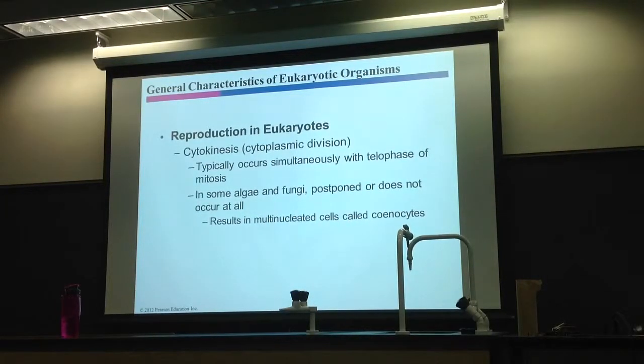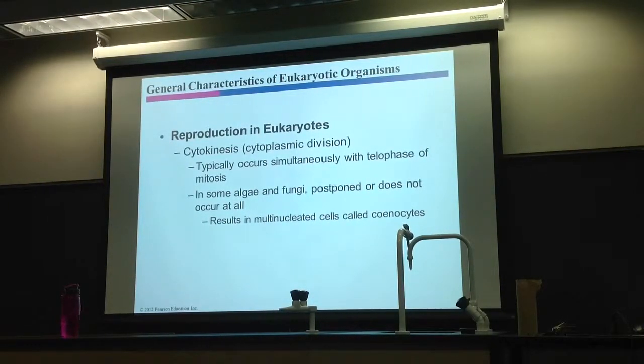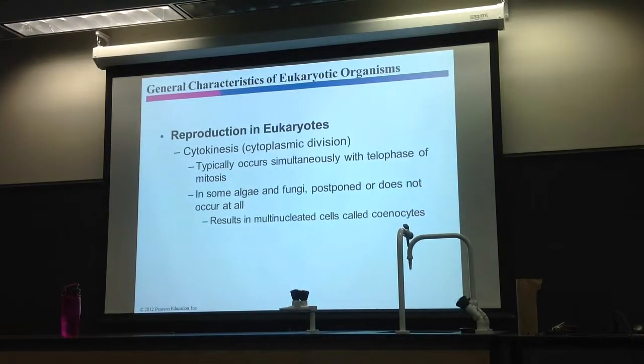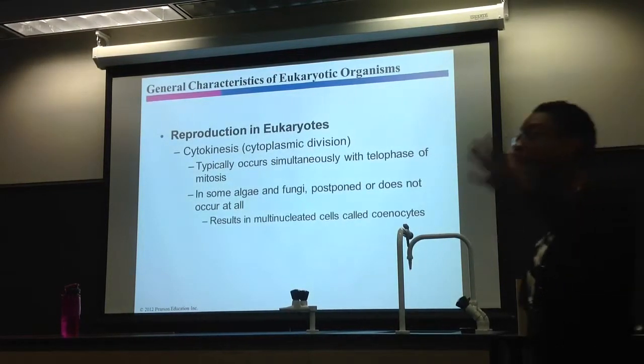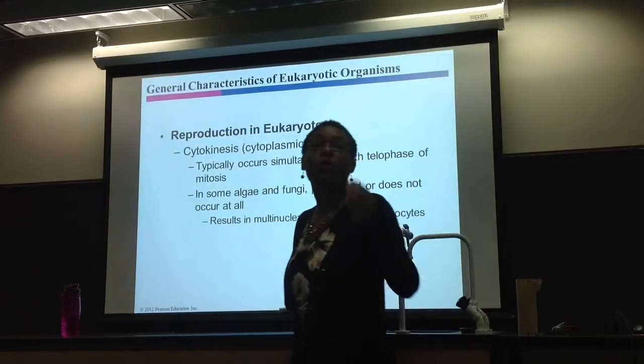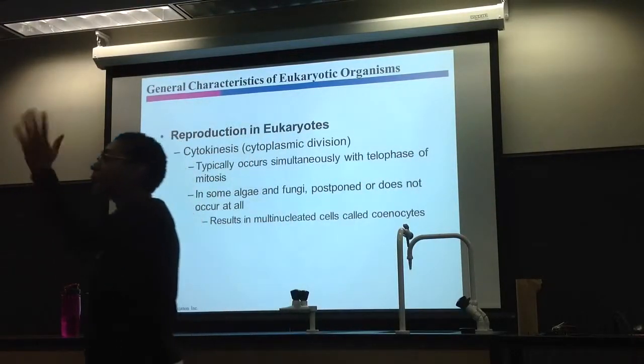Now, after you do mitosis or meiosis, that's nuclear division. That's just moving chromosomes around. We're not dealing with the cell, we're just moving chromosomes around. After you do that, you've got to now cut the cell in half. When you cut the cell in half, that is cytokinesis.